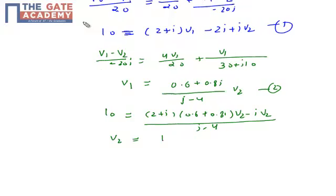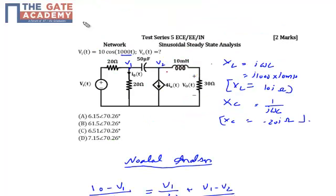So I can get the value of V2 as 170 upon (0.6 minus J26.2). Clearly, my V0 is basically a part of V2. It's a current RL network. So my V0 will be equal to R times V2 upon (R plus XL).